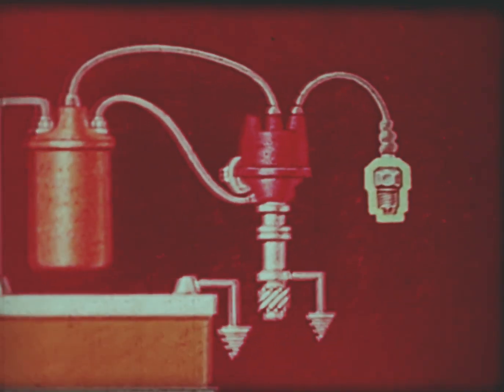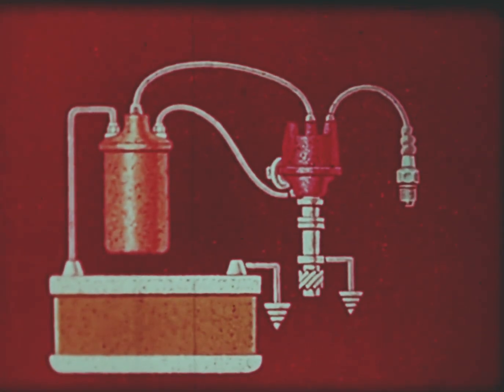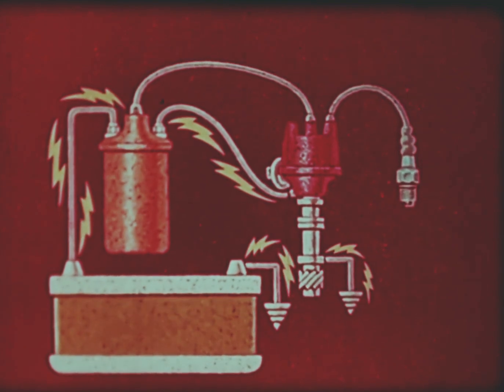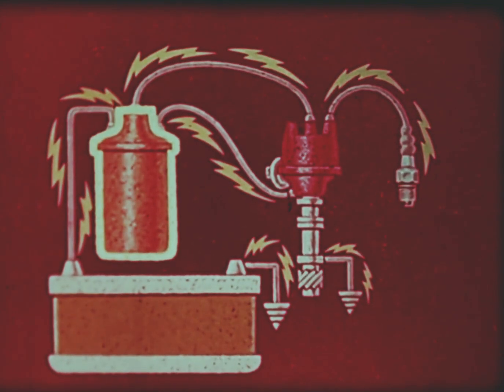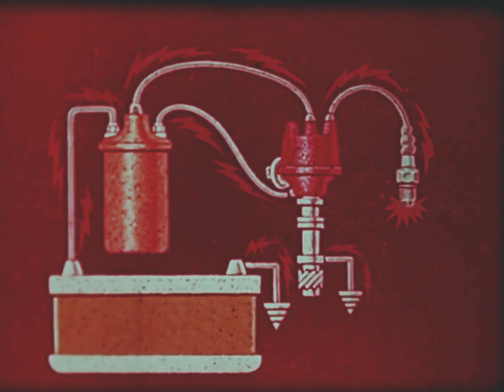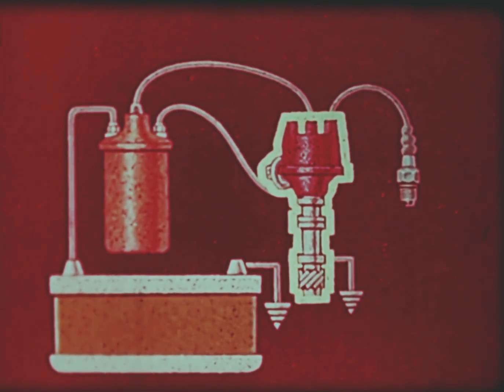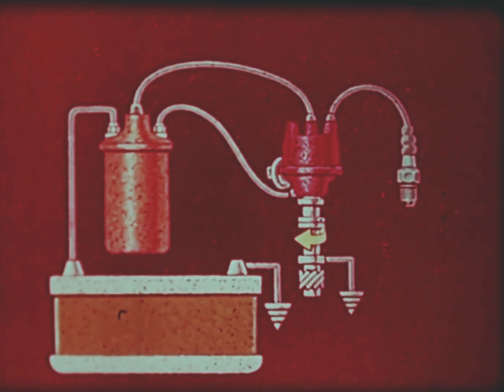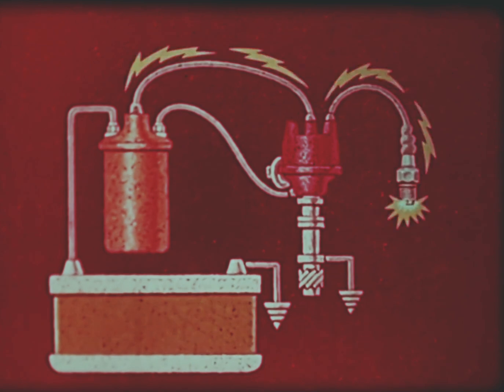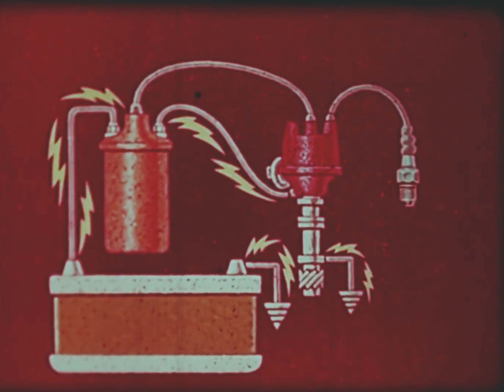Each cylinder has a spark plug. The low voltage electricity from my battery is increased to high voltage by an electric coil and causes a spark to jump the gap and ignite the mixture. The time when this happens is handled by my distributor. It's turned by a shaft that's geared to the engine so that the electricity is switched to the proper spark plug at just the right moment.